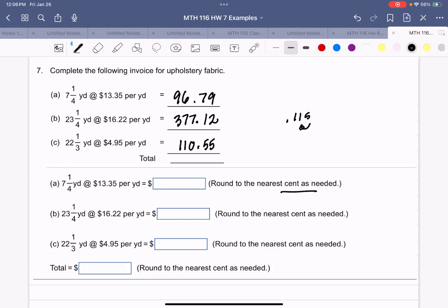Adding these together, $96.79 plus $377.12 plus $110.55, the total for the fabric is going to be $584.46.